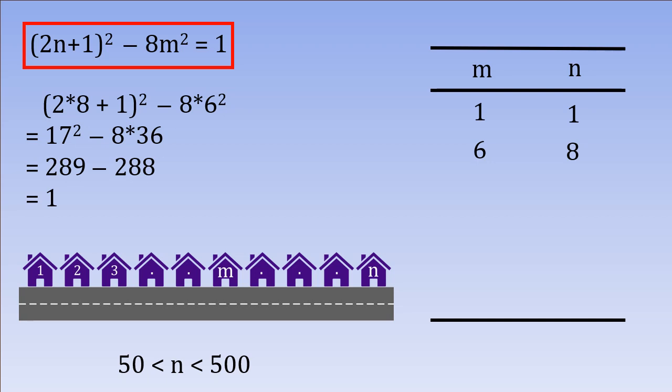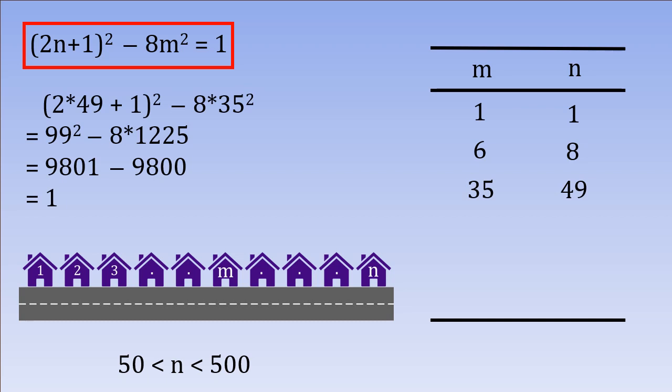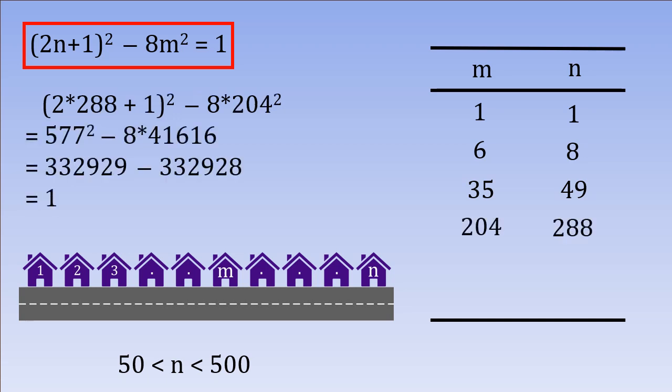We take help from a computer to find out the next solution is M equals 35 and n equals 49. Still not our answer. Further search reveals M equals 204 and n equals 288 satisfies our equation. And that's our answer.